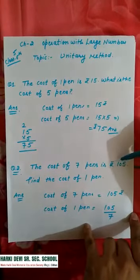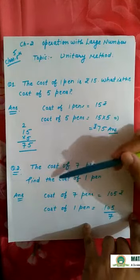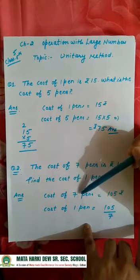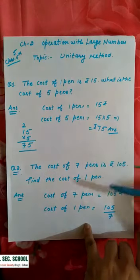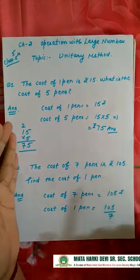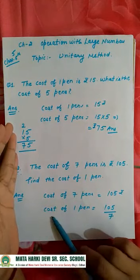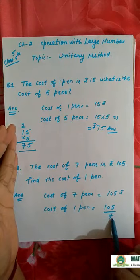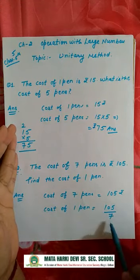Okay, the cost of seven pens is 105, then we find the cost of one pen. The cost of one pen is 105 by 7. Then this seven divides 105. So next, divide: seven ones are seven, one seven, ten minus seven is three.